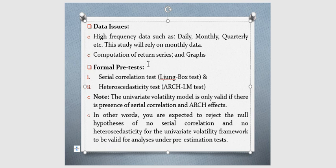Now, there are two tests you need to conduct before carrying out your volatility modeling. And the first test there is the serial correlation test and the heteroscedasticity test. These two tests are usually called formal pre-tests. You need to also note that the univariate volatility model is only valid if there is presence of serial correlation and ARCH effects. In other words, you are expected to reject the null hypothesis of no serial correlation and no heteroscedasticity for the univariate volatility framework to be valid for analysis under pre-test.